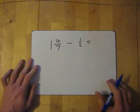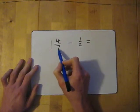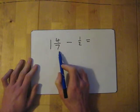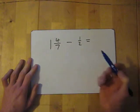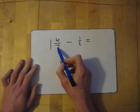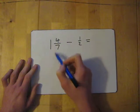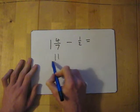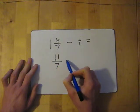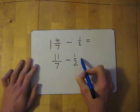Try another one. One and four sevenths take away half. First thing, convert this into an improper fraction. Remember, if it's a mixed number, ask your math for help. One times seven gives me seven and then add the four which gives me eleven.